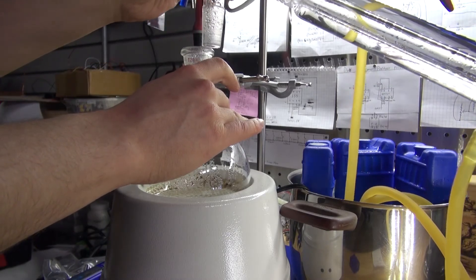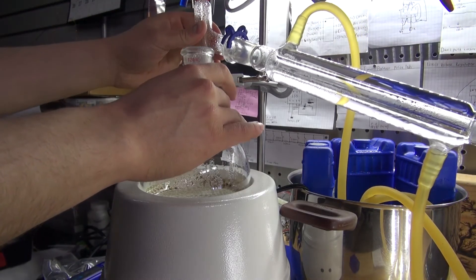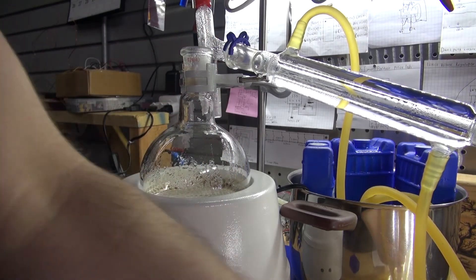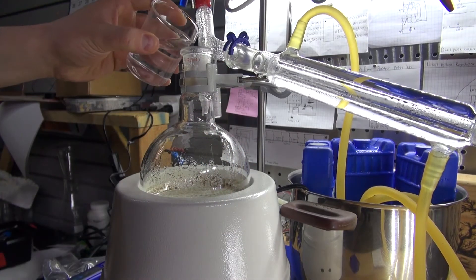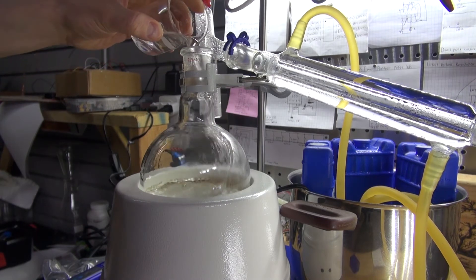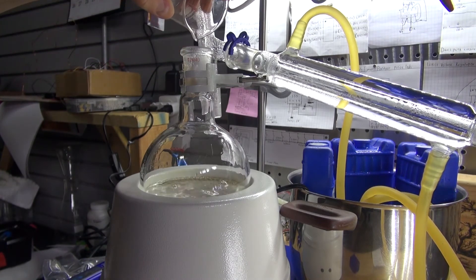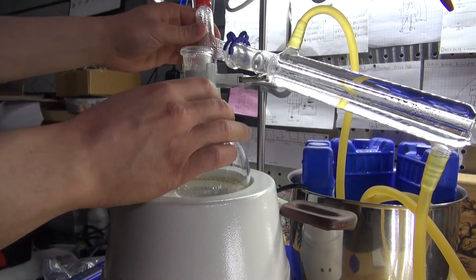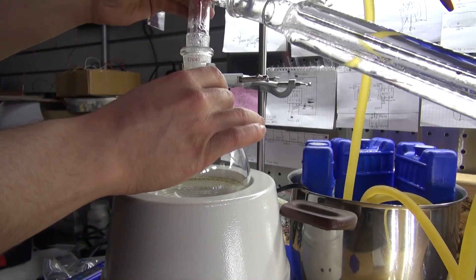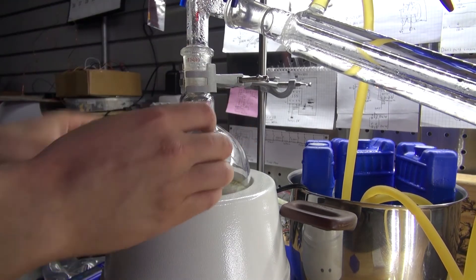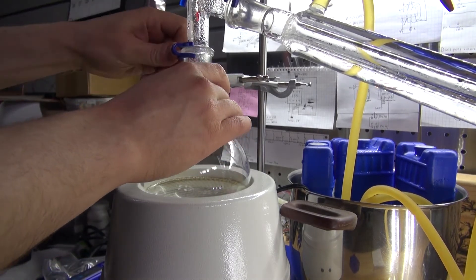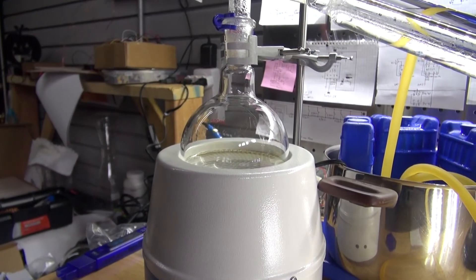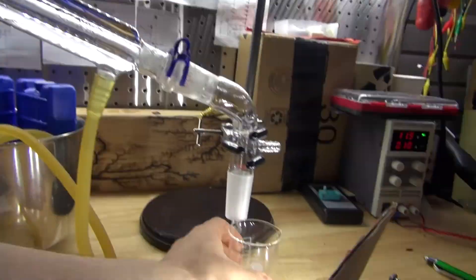So now what I'm going to do is pour the distilled water that I created back into my Florence flask and repeat the process a second time. Put everything back together. Crank up the heat and wait for it to boil and recondense.